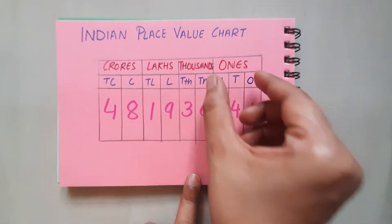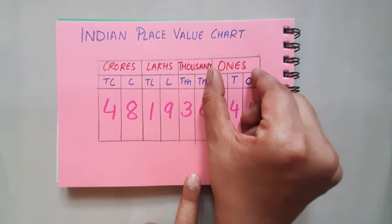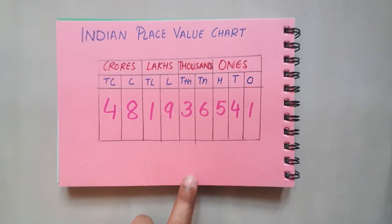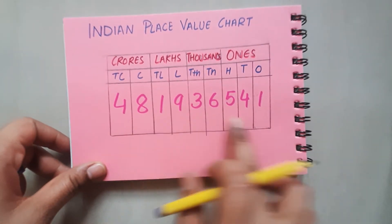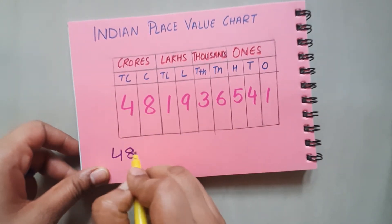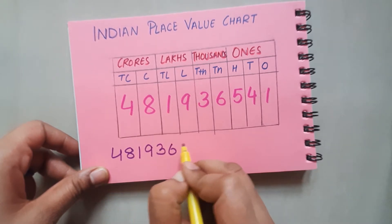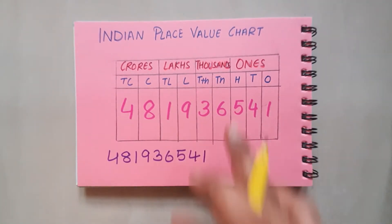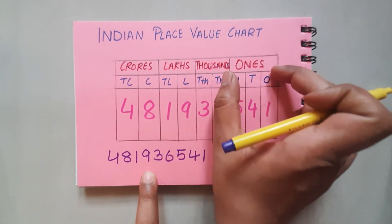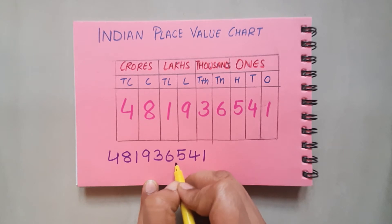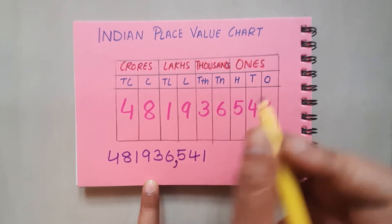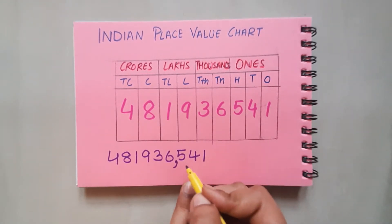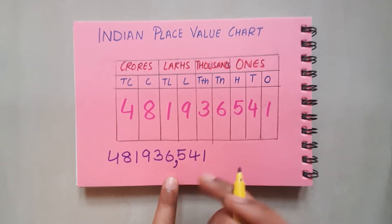Let us also understand about the periods — why do we have periods? Periods help us to read large numbers. Suppose this is the number in the place value chart. At once, you will not be able to read this number — it's a large number! But here's how periods help us. In a number, we mark the periods: in the ones period we have three places — ones, tens, and hundreds — so I'm going to mark my period here.